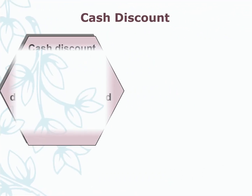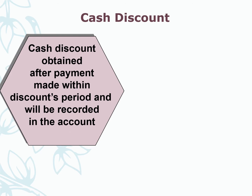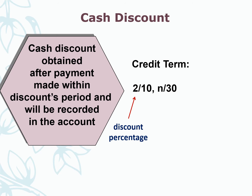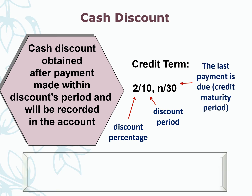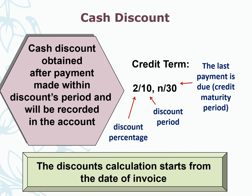Cash discount. A cash discount is obtained after payment is made within the discount period and will be recorded in the accounts. Credit terms, for example, are written as 2/10, n/30. The '2' is for the discount percentage, '10' is for the discount period, and 'n/30' means the last payment date is 30 days. The discount calculation starts from the date of invoice.